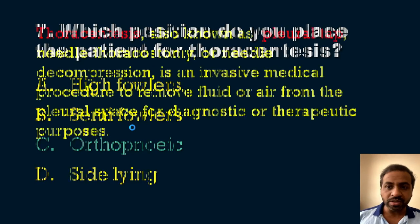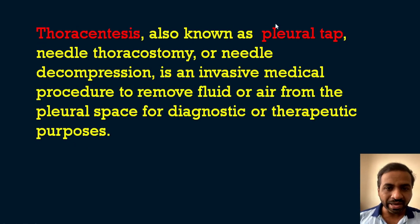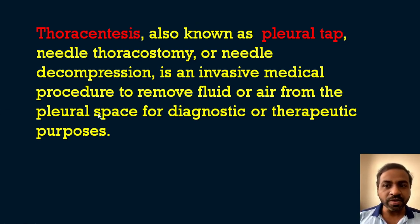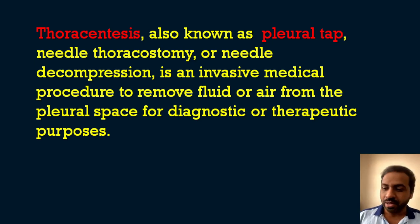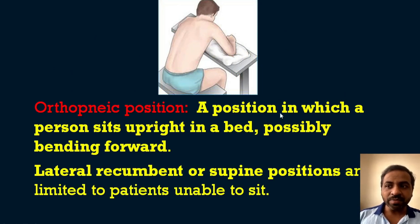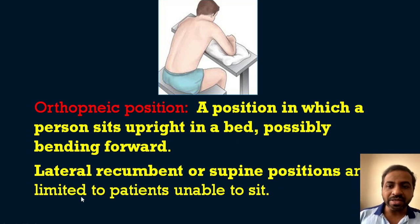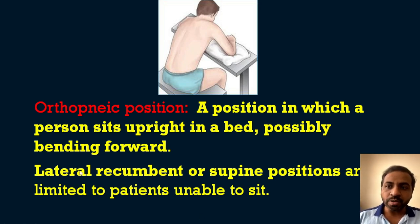The answer is option C, orthopneic position. The patient sits upright, possibly bending forward. If the patient is unable to sit, the lateral recumbent or supine position can be used. The orthopneic position is the best position for thoracentesis, allowing optimal access to the pleural space.